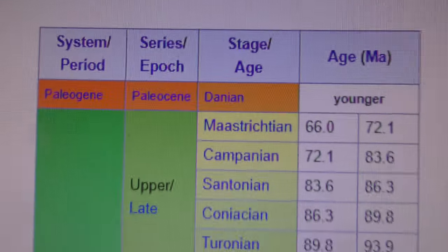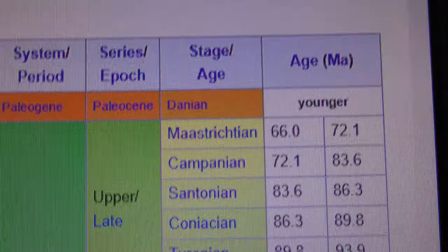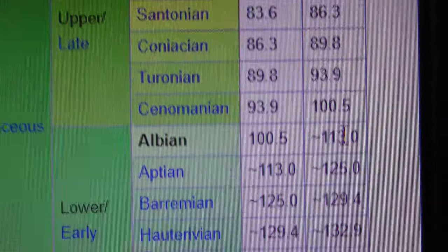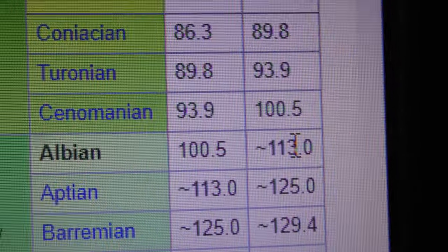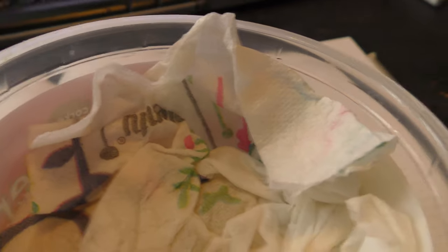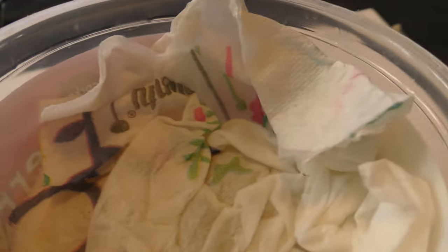This is their information. So 100 to 113 million years old if it is that type of ammonite, Hoplites dentatus.